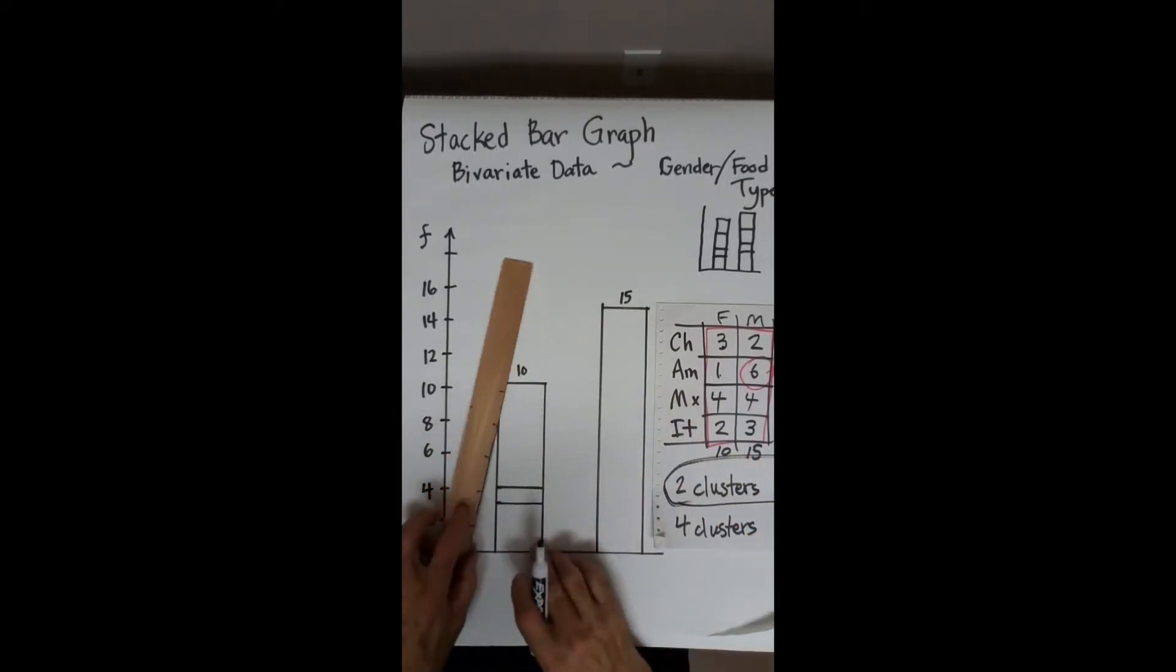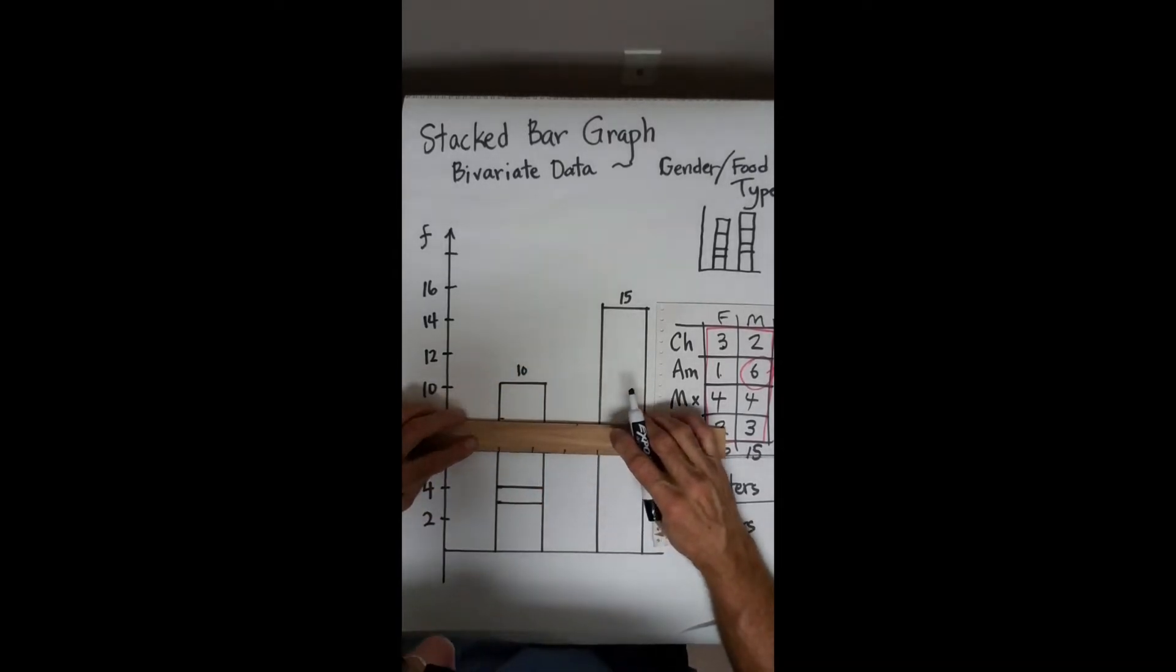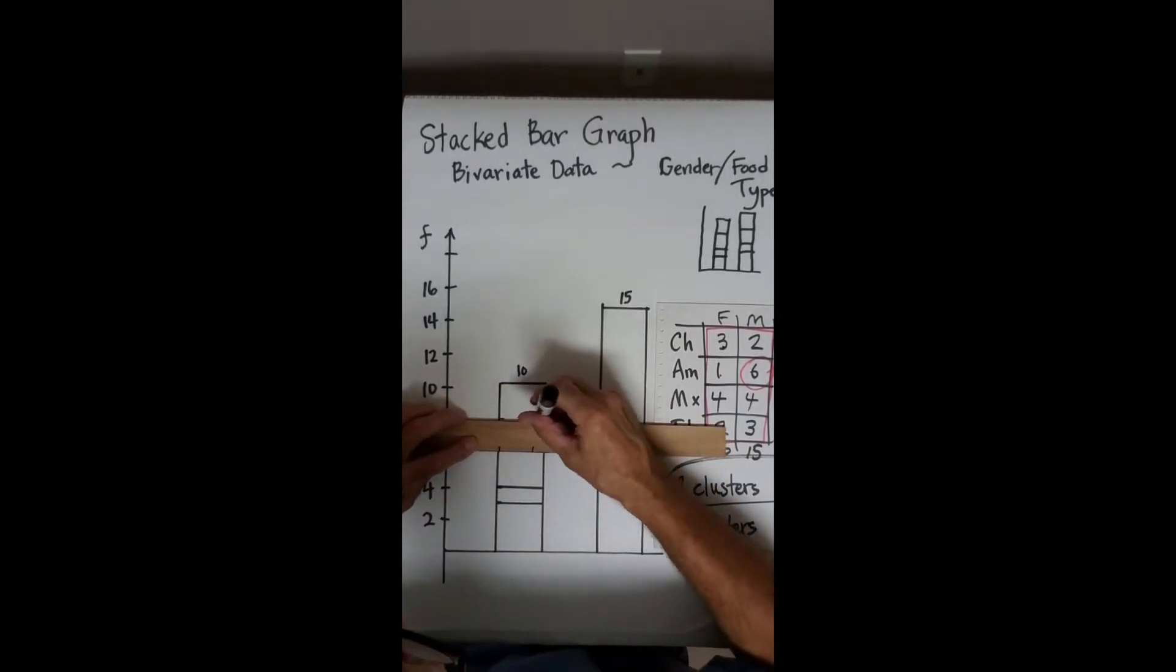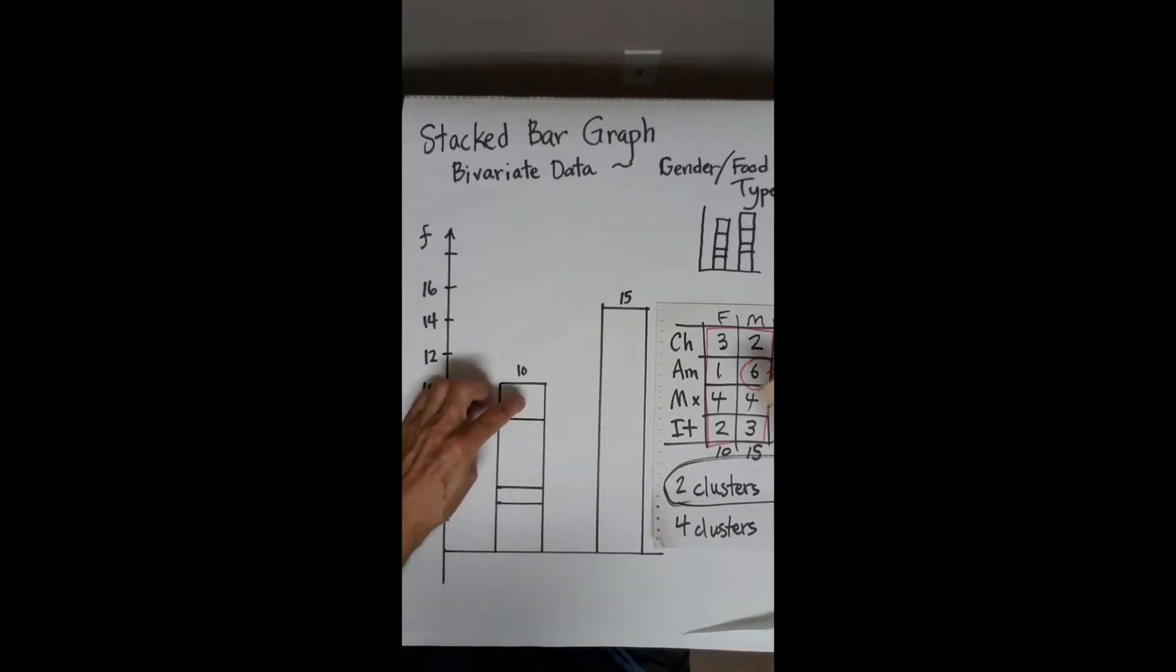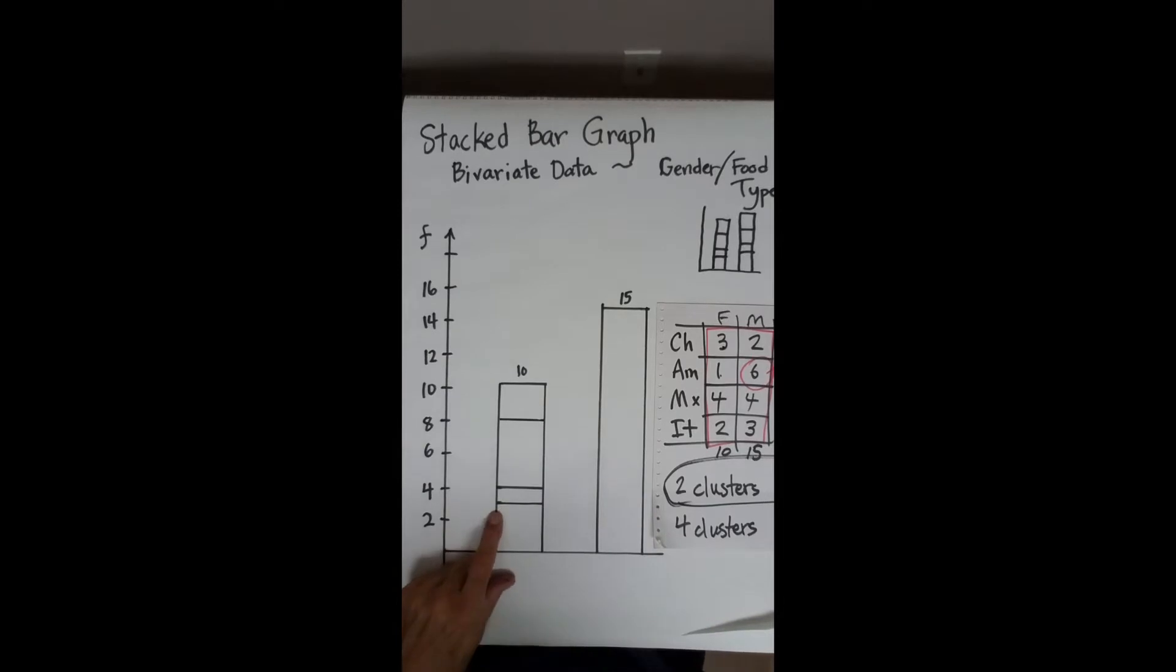Then 4 ladies cared for Mexican. So I'll go, I'm counting by 2, it's 2, 4. So that would be Mexican. And the final two are Italian. Don't try to put numbers in here. They become, you're cluttering the graph. The reader should be able to say, okay, this is 4 minus 3 is 1.